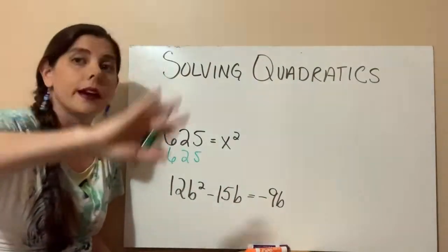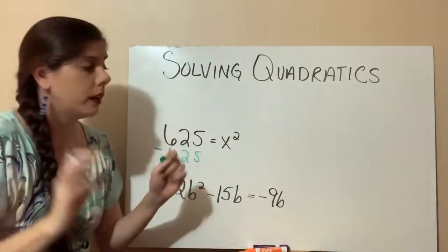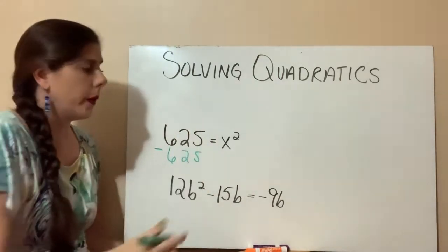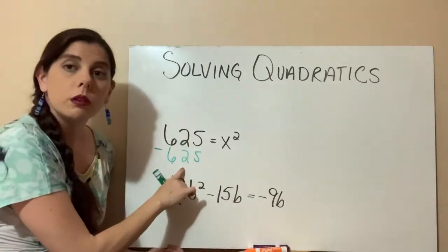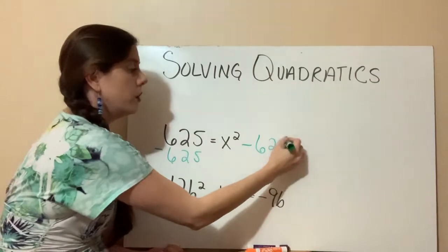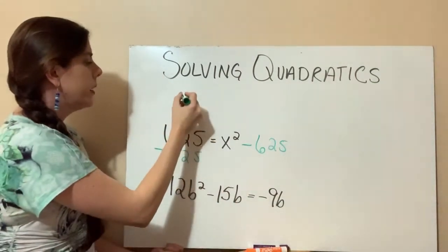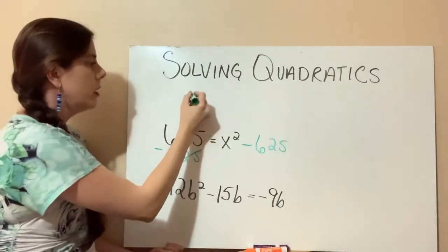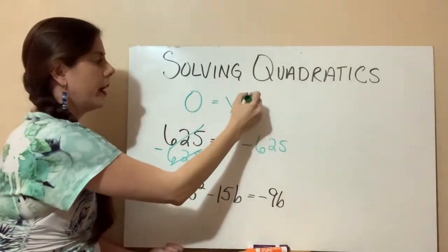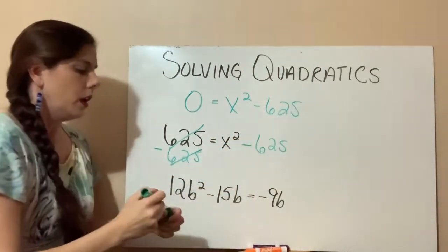So just because they're in a chapter that we went over weeks ago doesn't mean we're done with it. Use our property of equality to set this side equal to 0, and whatever you subtract on the one side, you subtract on the other. So now our equation can be written, these are going to cancel out. So 0 on one side, and on the other side we have x squared minus 625. Are we done?